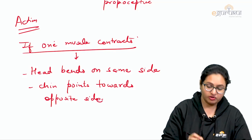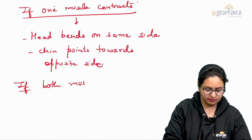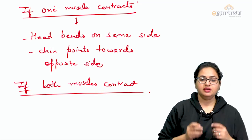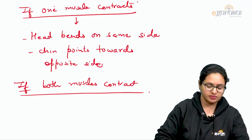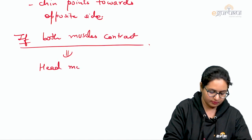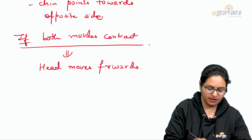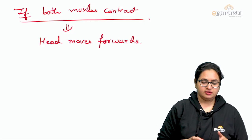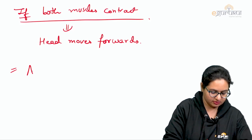If both sternocleidomastoid muscles contract simultaneously, the head moves forward. The sternocleidomastoid also acts as an accessory muscle of respiration.